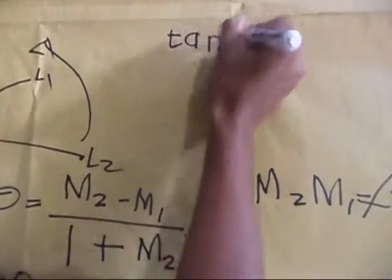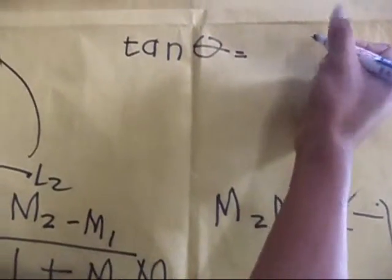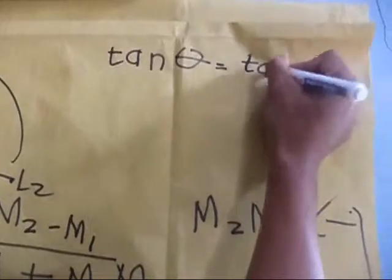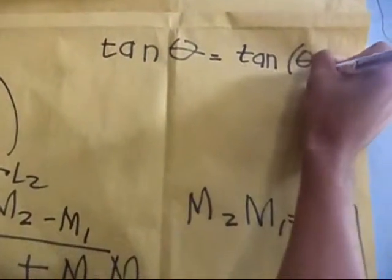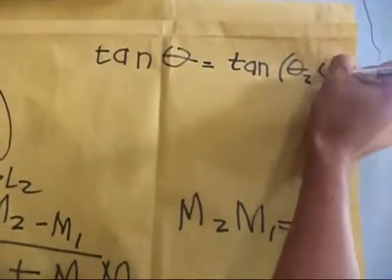Then tangent theta equals tangent of the difference theta 2 minus theta 1.